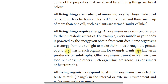Some organisms — for example, plants — make their own food through a process of photosynthesis. Such organisms are known as producers or autotrophs. Animals cannot make their own food, so they are consumers. Such organisms are known as consumers or heterotrophs.